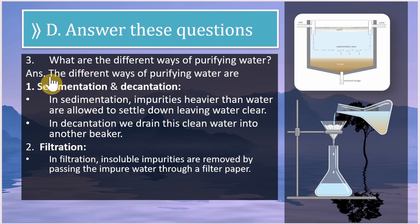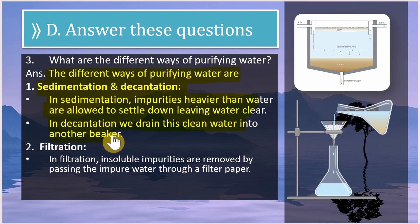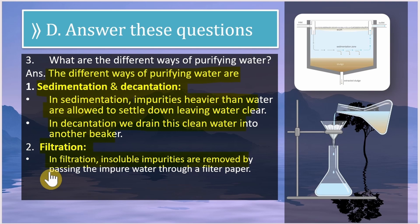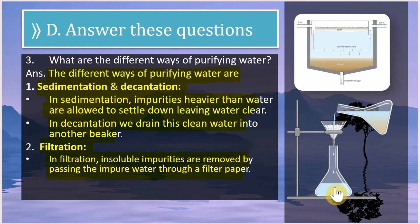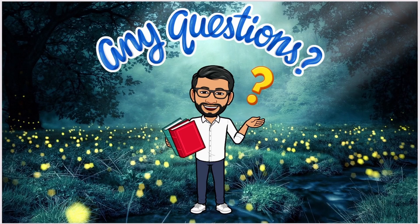The last question: what are the different ways of purifying water? First, sedimentation and decantation — in sedimentation, impurities heavier than water are allowed to settle down, leaving the water clear; in decantation, this clean water is drained into another container. Second, filtration — in filtration, insoluble impurities are removed by passing impure water through filter paper placed in a funnel, giving you pure water.